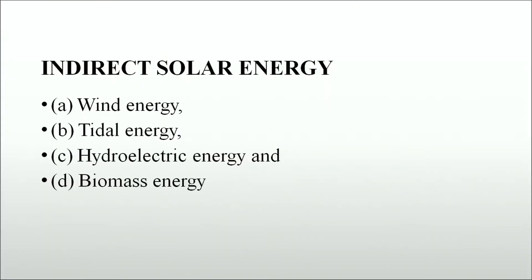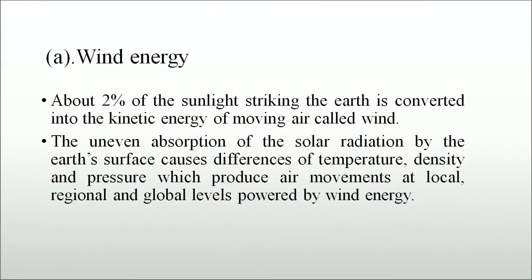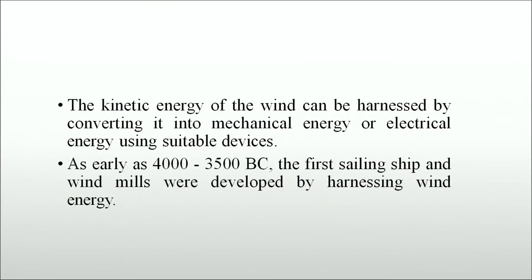Indirect solar energy can be obtained in the form of wind energy, tidal energy, hydroelectric energy and biomass energy. About 2% of the sunlight striking the earth is converted into kinetic energy of moving air called wind. The uneven absorption of solar radiation by the earth's surface causes differences of temperature, density and pressure, producing air movements at local, regional and global levels. The kinetic energy of wind can be harnessed by converting it into mechanical energy or electrical energy using suitable devices.